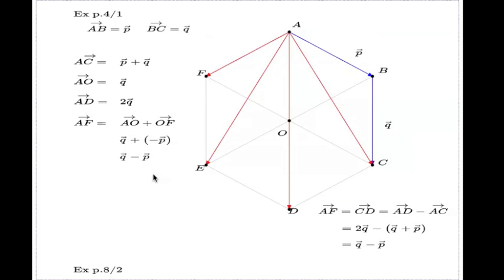AE vector now comes from the triangle AFE. AE vector will be the sum of this vector and this vector. Here it is: AF vector, we know this vector already, and FE vector we also know because this vector is parallel to your q vector here.